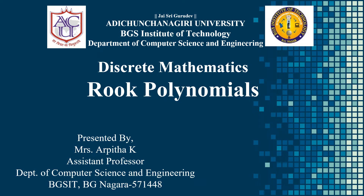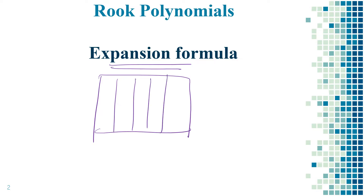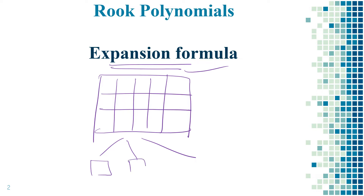Hello everyone. In this video let us learn the expansion formula, the method to find out the rook polynomial. Till now we have not used the expansion formula to find out the rook polynomial. The expansion formula can be used whenever the board is too complex — that means it contains too many rows and columns. The given board can be divided into a number of different components, and for each small component we find the rook polynomial separately, then combine them to find the rook polynomial for the final board, R(Cx).